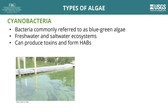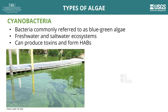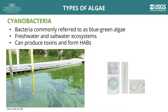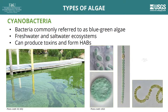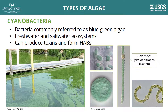Cyanobacteria are known as blue-green algae. They are actually a type of bacteria but are commonly referred to as algae because they have chlorophyll and most are aquatic. Cyanobacteria exist in freshwater ecosystems such as Lake Okeechobee in Florida. They can also occur in saltwater. Some species of cyanobacteria can form HABs and produce toxins.